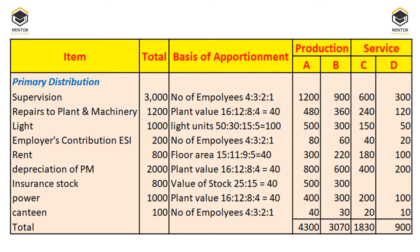Lighting is divided on lighting units — that is, light points. Employer's contribution to ESI is divided on the number of employees basis. Rent is divided on floor area. Depreciation is divided on value of plant because depreciation is charged on plant only. Insurance on stock is divided on value of stock. Power is divided on value of plant because power is consumed by machinery; since horsepower data was not provided, we use value of plant. Canteen expenses are divided on number of employees, as the canteen serves food to employees.